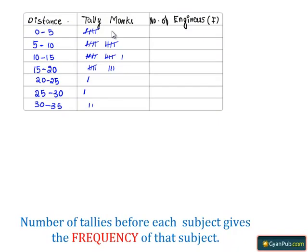Here, 0 to 5 has frequency 5, 5 to 10 has 5 plus 5 equals 10, for the interval 10 to 15 it's 11, for 15 to 20 it's 8, and so on. The sum of all the frequencies is 40.